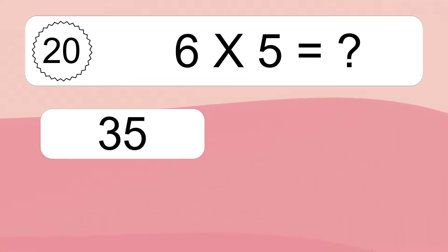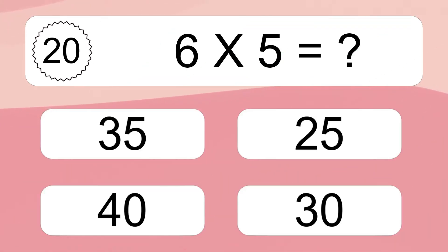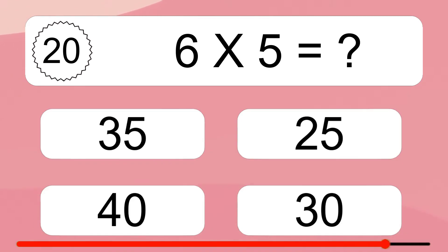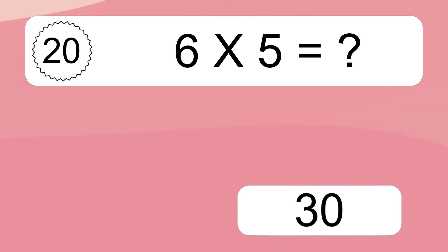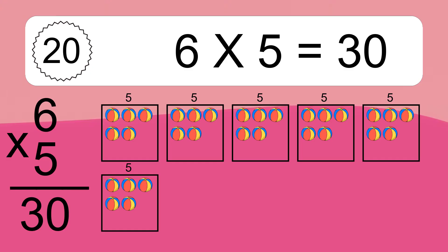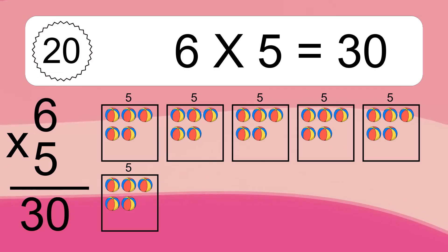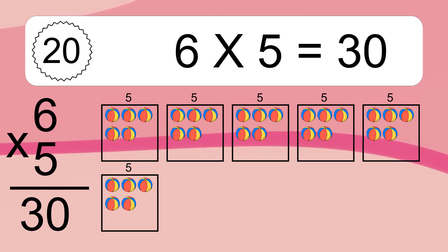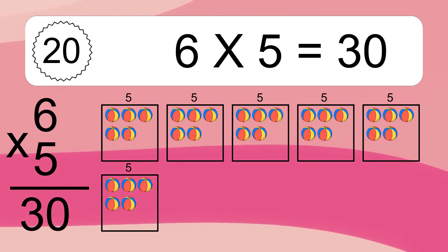6 times 5 equals what? 6 times 5 equals 30. We have 6 boxes and each box has 5 colorful balls inside. If you count all the balls in all the boxes together, you will have 6 times 5 balls. This equals 30 balls.